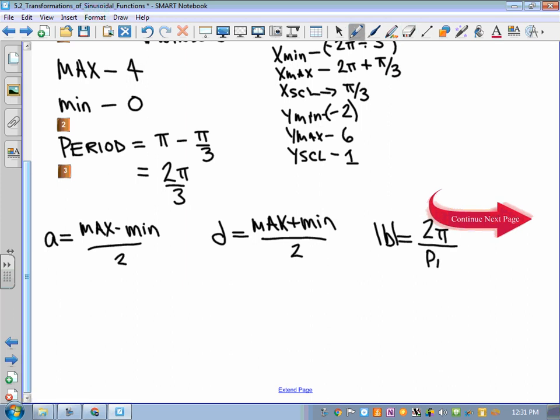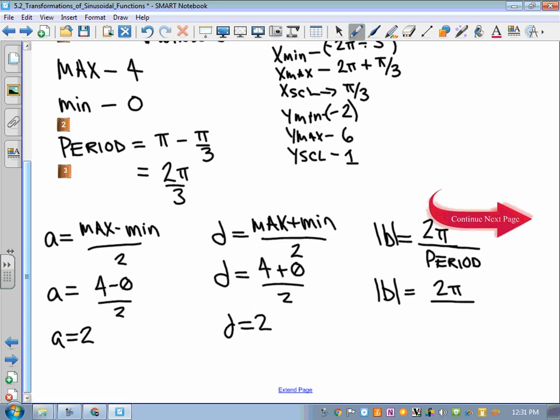Using those equations, we can determine that A is 4 minus 0 over 2. So A is 2. We have that D is equal to 4 plus 0 over 2, which is 2. And the absolute value of B is 2 pi divided by our period, which we determined to be 2 pi over 3. That's 2 pi multiplied by 3 over 2 pi. So B is 3.